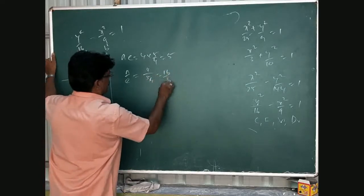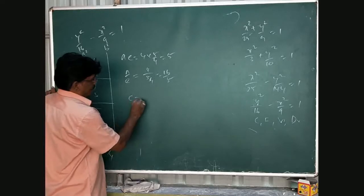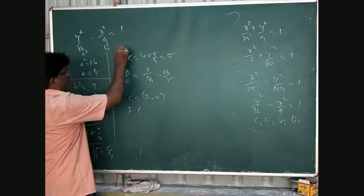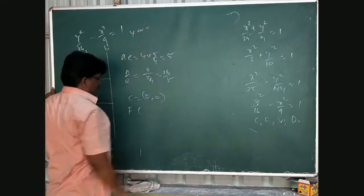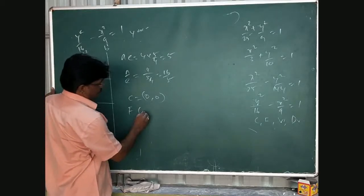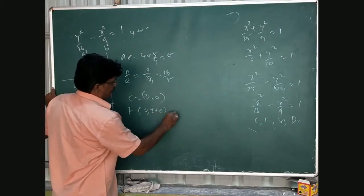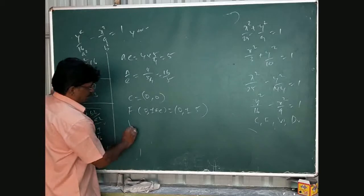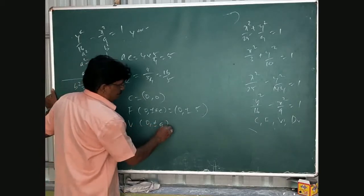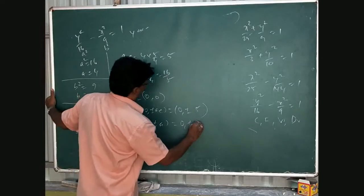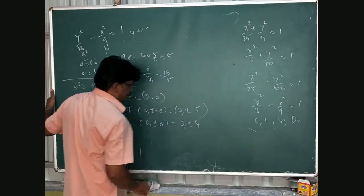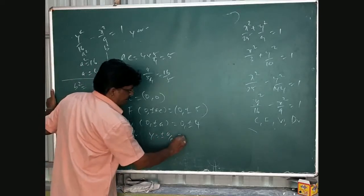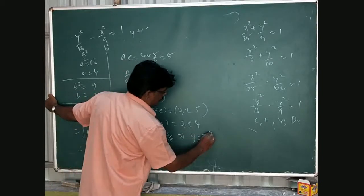So now first center 0, 0. Focus, this is parallel to y axis, conjugate axis. This is 0 comma plus or minus ae equals 0 comma plus or minus 5. And vertex 0 comma plus or minus a, 0 comma plus or minus 4. And directrix y equal plus or minus a by e, implies y equal plus or minus 16 by 5.